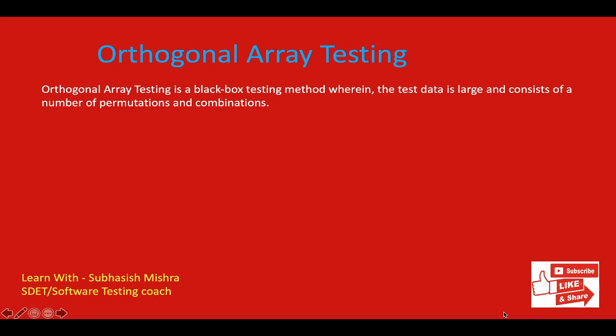Orthogonal array testing is a black box testing method where the test data is large and consists of a number of permutations and combinations. It is a statistically based testing approach, especially useful when the system to be tested has huge data inputs. It helps to maximize test coverage by pairing and combining the inputs.